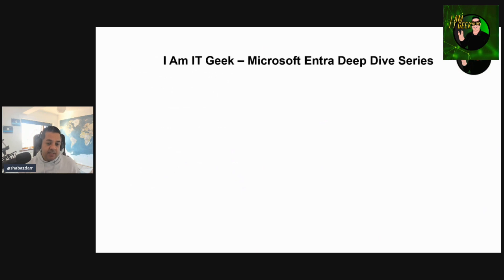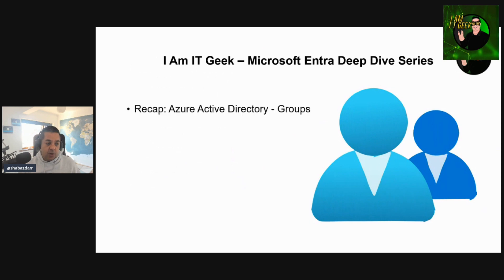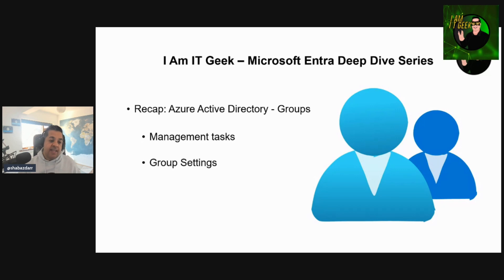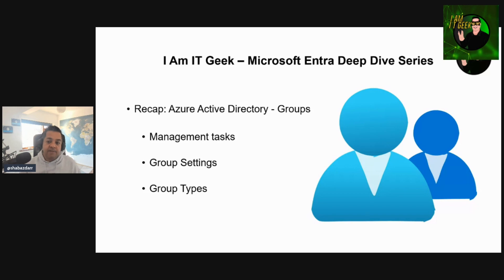Let's just recap what I spoke about in the last episode. It was about group management tasks — how to manage groups, what properties we can change, where we can assign members and owners. We looked at group settings: allowing owners to approve group membership, letting users create groups. We also covered three group types: security groups, Microsoft 365 groups, and dynamic groups, and finished by configuring a dynamic group and discussing best practices.